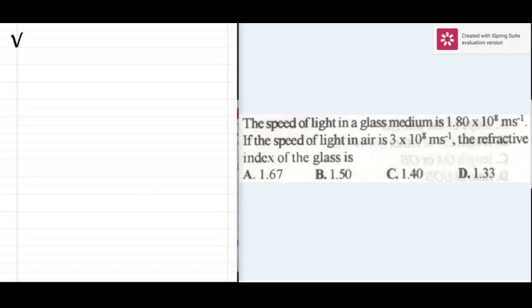is given as 1.8 times 10 to the 8 meters per second. The speed of light in air is 3 times 10 to the 8 meters per second.